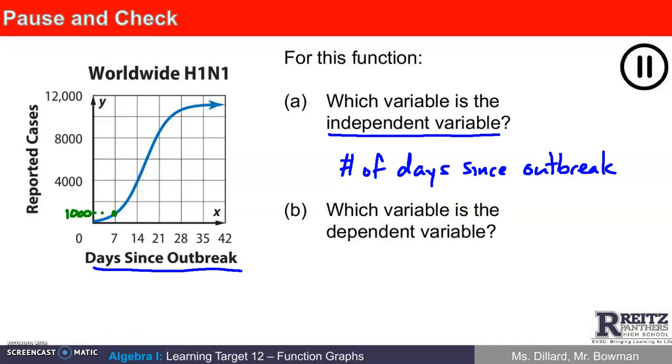Which variable is the dependent variable? Well, that's the vertical axis of the graph. That's the number of reported cases of H1N1.